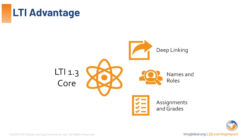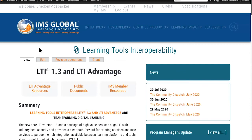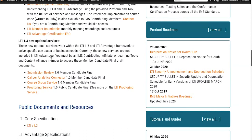That's an overview of LTI Advantage. Advantage is a combination of four specifications: the LTI 1.3 core implementation, plus Deep Linking, Names and Roles, and Assignments and Grades. There are many great resources for learning and implementing LTI. The primary one is the LTI project page on the IMS website, under the Developers tab, under Learning Tools Interoperability. There you'll find the actual specification links for each service and lots of other learning resources.